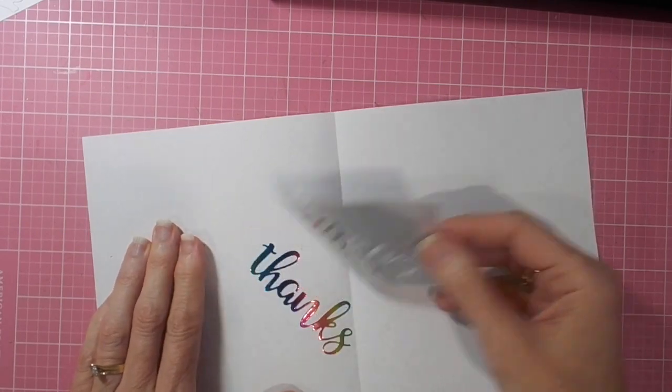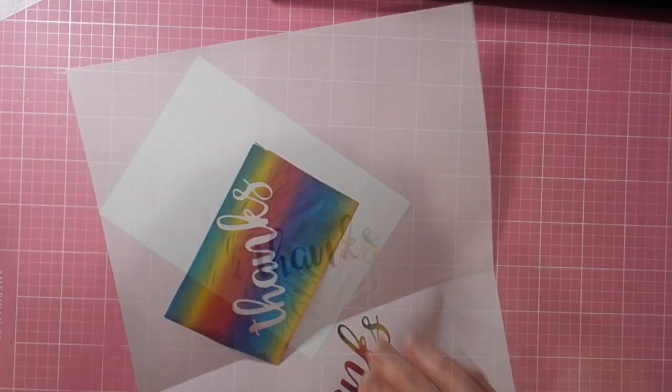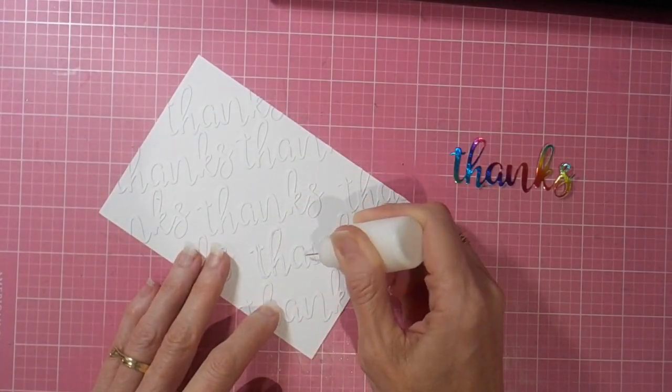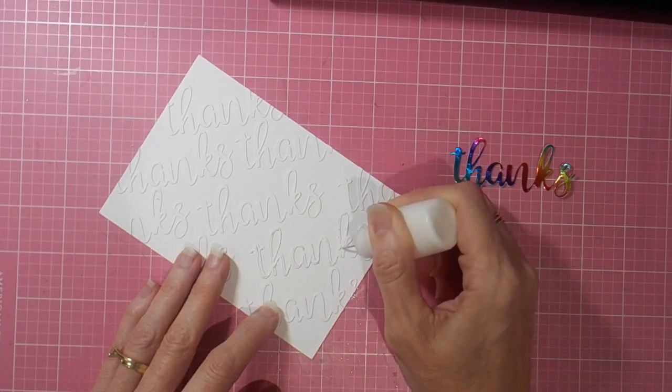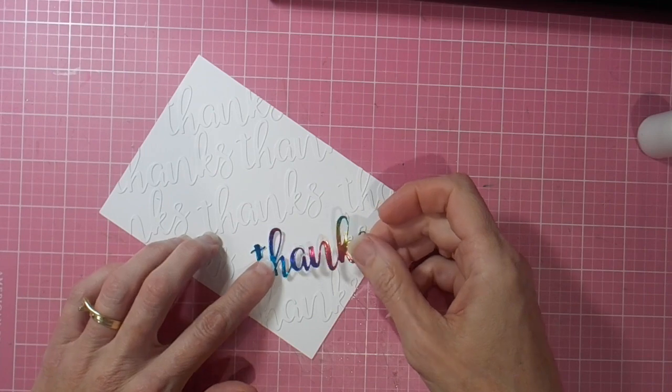There's never any issue with that. It always does a great job with the laminator. Then just gently peel it off and there you've got your beautiful little foiled word. So then it was a matter of deciding which of my white words I would stick this one on top of.